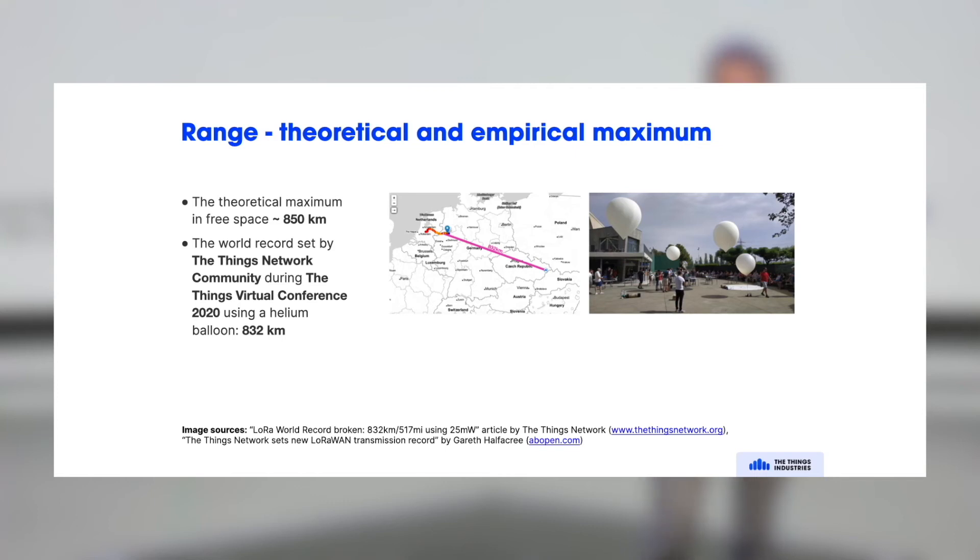So the theoretical maximum is 850 kilometers with the free space path loss algorithm that I showed before. And during the Things Virtual Conference in early 2020, there was another experiment with a helium balloon and with a small transceiver that sends a message with normal spectrum regulations for Europe. So that's 14 dBm or 25 milliwatts of power. It sent a message all the way from a weather balloon. I think it was like 36 kilometers of altitude and it reached the gateway in Czech Republic. And that's 832 kilometers. So it's real.